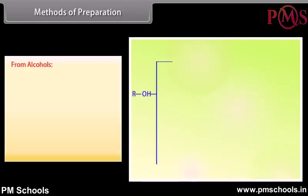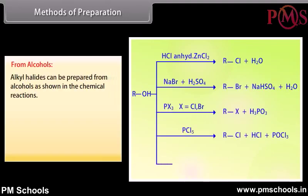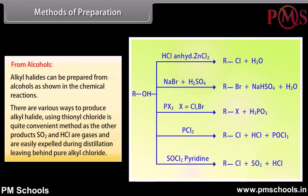Alkyl halides can be prepared from alcohols as shown in the chemical reactions. There are various ways to produce alkyl halides; using thionyl chloride is quite a convenient method, as the other products SO2 and HCl are gases and are easily expelled during distillation, leaving behind pure alkyl chloride.